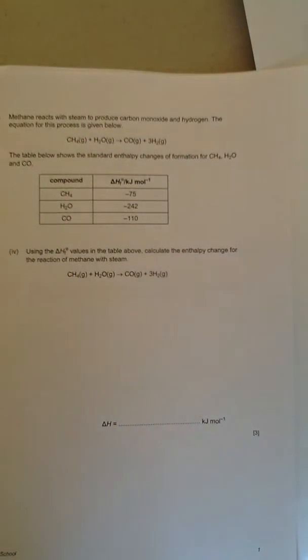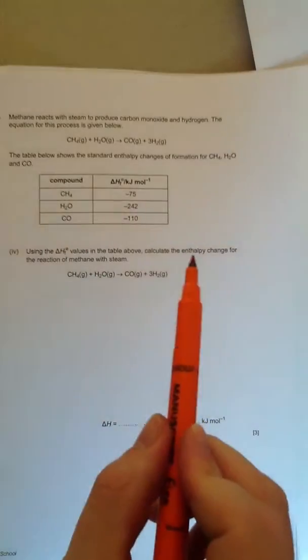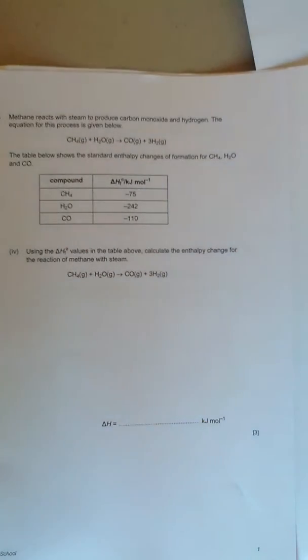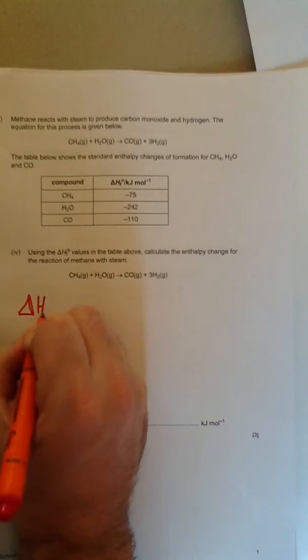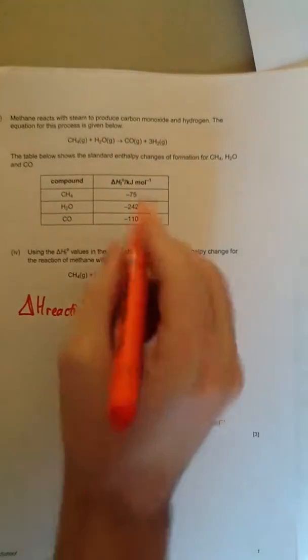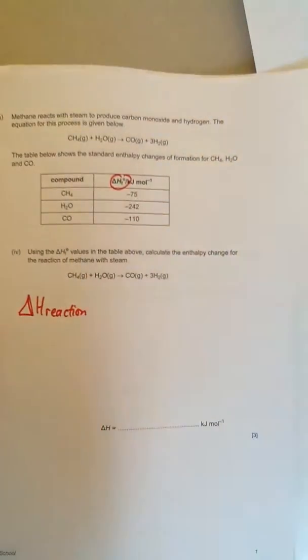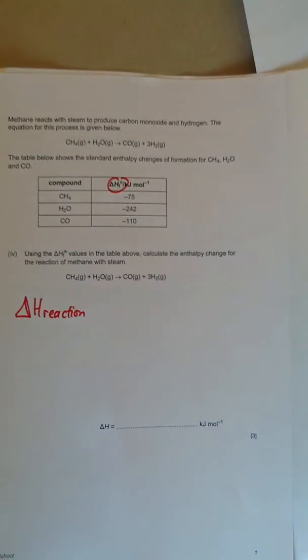We'll start with this one. It says use delta H naught F in the table below to calculate the enthalpy changes for the reaction. So the delta H of the reaction when you're given delta H naught F, when you're given the enthalpies of formation...